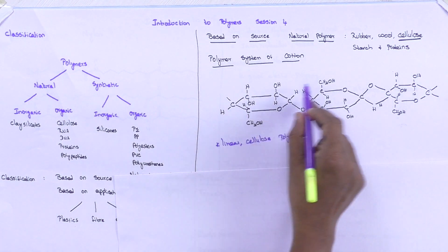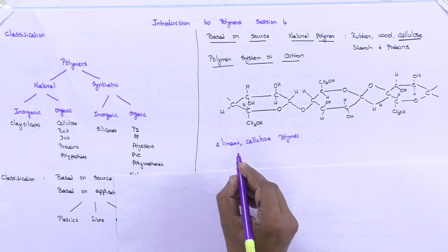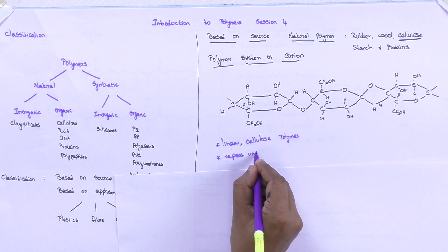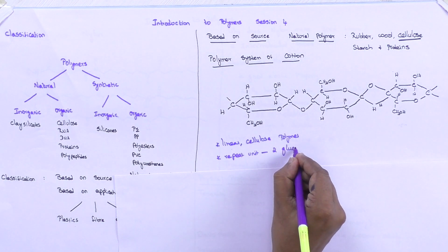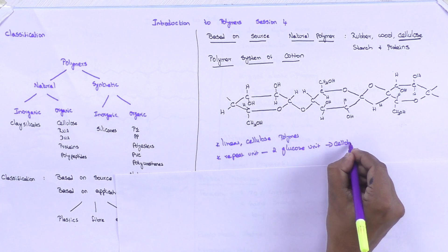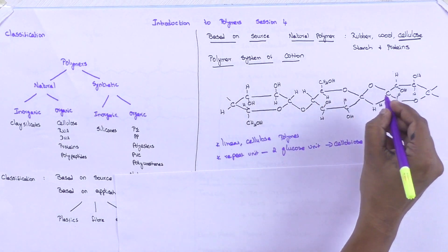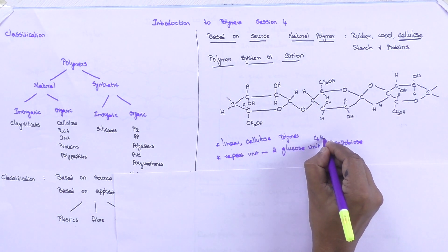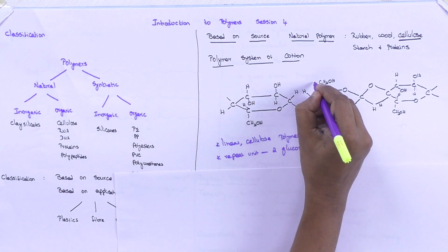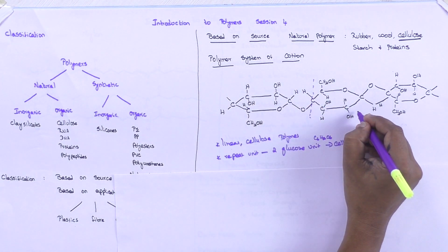This is the polymer system of cotton — it is a linear cellulose polymer. You can see the repeat unit here, which consists of two glucose units. We call that unit cellulose. Glucose is nothing but C6H12O6, and the glucose unit can be indicated including the carbon atoms drawn in the ring structure.